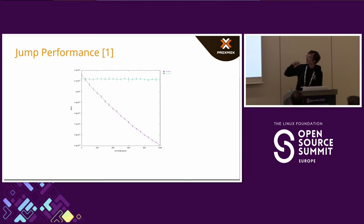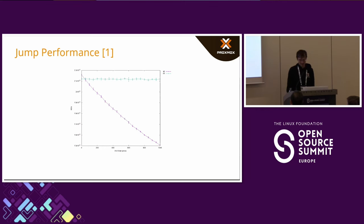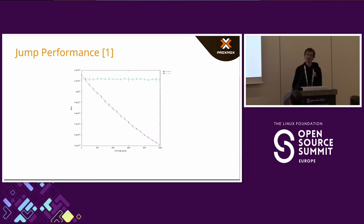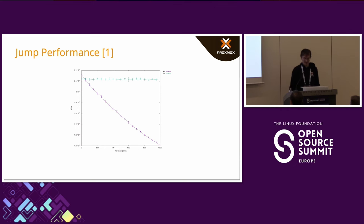This is a performance comparison of NF Tables and IP Tables from colleagues at Red Hat. You can see that with more chain jumps, the IP Tables throughput goes down (the purple line). But with NF Tables using data structures, throughput stays at the same level regardless of how many branches or combinations you have to check.